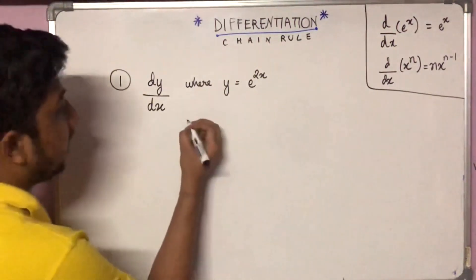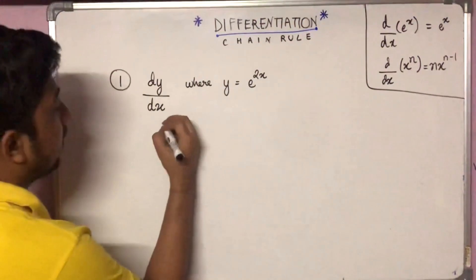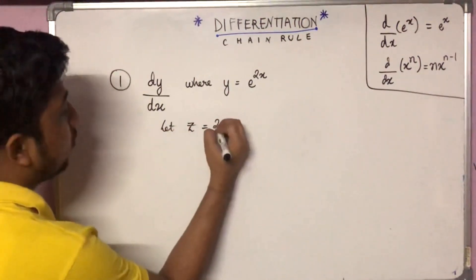Suppose we do that. Let's say we take z equal to 2x.